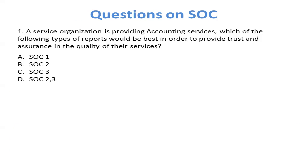Question 1: A service organization is providing accounting services. Which of the following types of report would be best in order to provide trust and assurance in the quality of their service? The main key point here is accounting service. When talking about financial statements, investment, books of account, custodial service, payroll processing, or accounting service — it's talking about a financial system. So the correct answer is A, SOC 1.